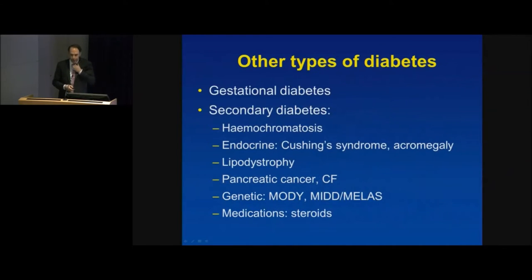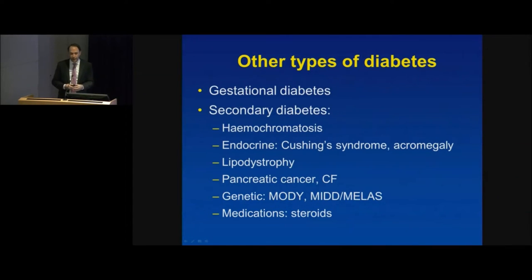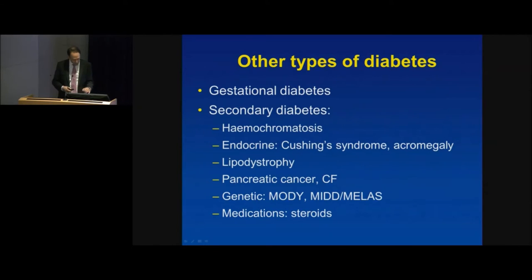There are other types of diabetes. Gestational diabetes is diagnosed during pregnancy. Secondary causes include hemochromatosis — a condition of excess iron absorption — where some people develop diabetes. There are also endocrine conditions like Cushing's syndrome, where too much steroid is produced, and acromegaly, where too much growth hormone is made. Both can present with diabetes, and treating the underlying condition can actually make the diabetes better.